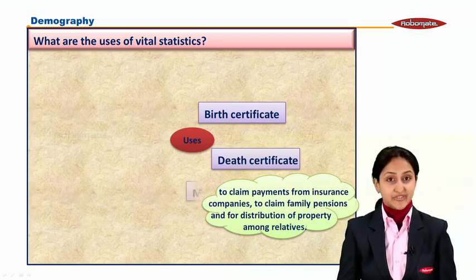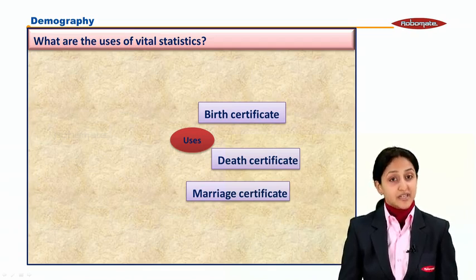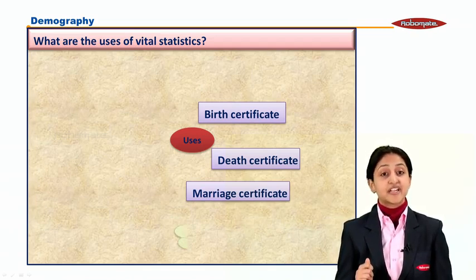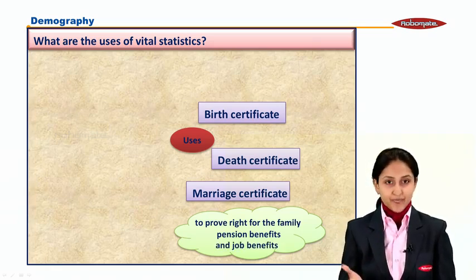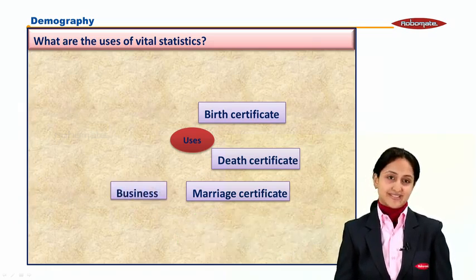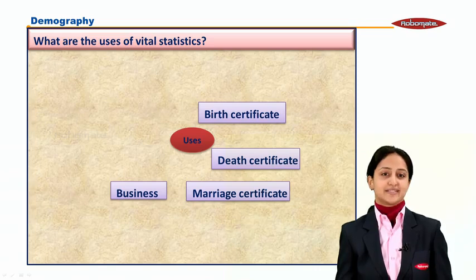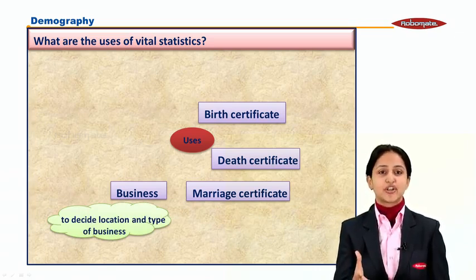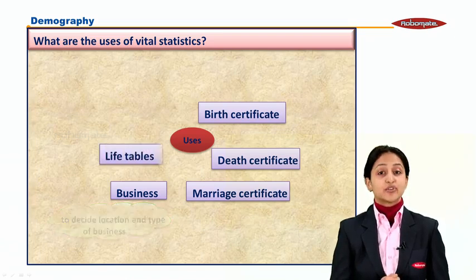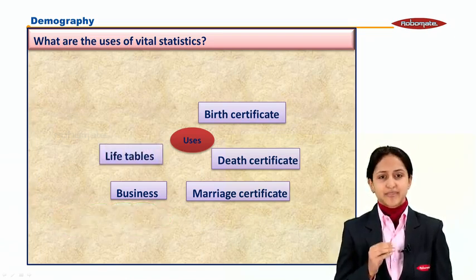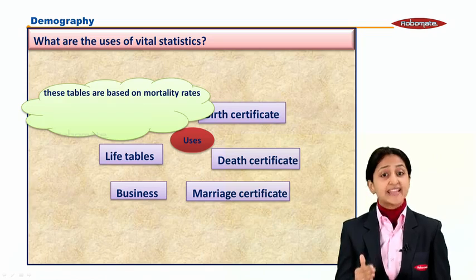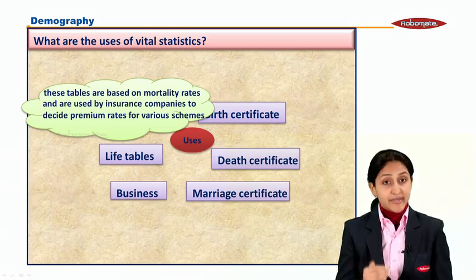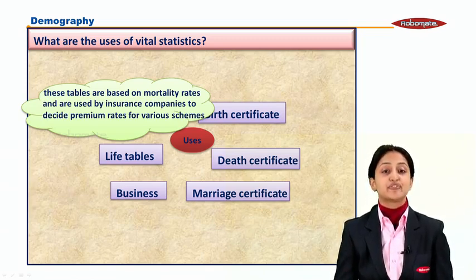Similarly, we can record marriage with the help of a marriage certificate. This certificate also has legal importance — it proves your right to family pension benefits and your right to job benefits. Apart from these, vital statistics are used in businesses. Businesses decide the nature of business, the type of business, and the location of business based on vital statistics. Vital statistics are also used in life tables, which are based on mortality rates — that is, death rates — and they are used by insurance companies to decide the premiums of various insurance schemes.